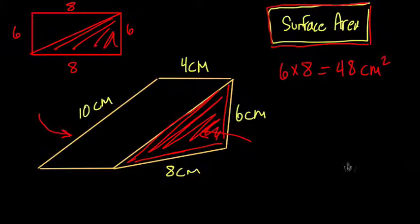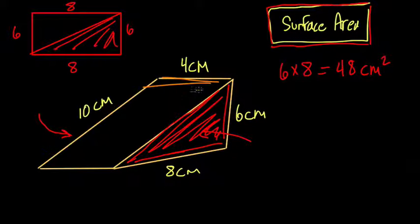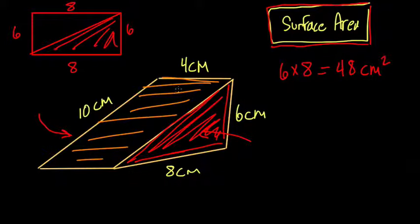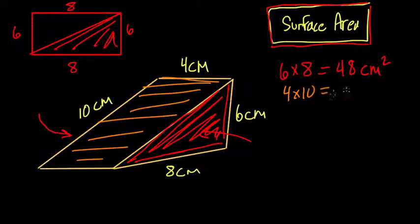Now the rectangles are not all going to be the same, because each length of the triangle is different. So the rectangle on top is a 4 by 10 rectangle, which is 4 times 10, and that equals 40 square centimeters.